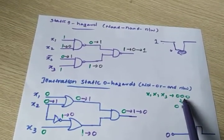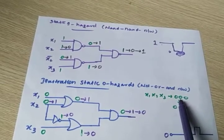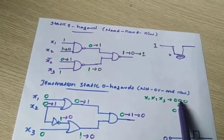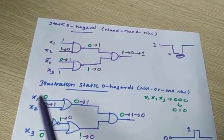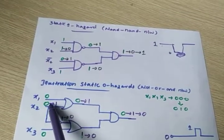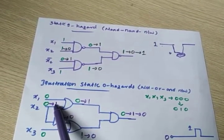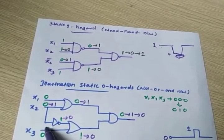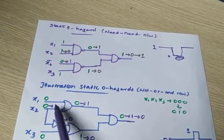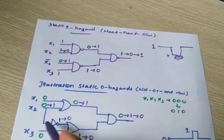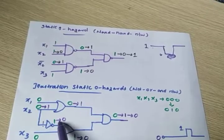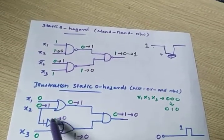Now X1, X2, X3 — this X2 changes from 0 to 1. I am changing X2 from 0 to 1. This NOT gate has some propagation delay, assume that. So this 0 changes to 1 at the input side. That means here it becomes 1, and the output should be 0. But this 1 that came here — that 1 means output is 0, but it won't go to 0 immediately. Why? Because there is a propagation delay.